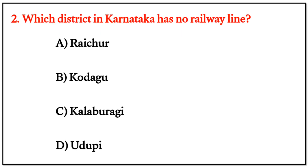MCQ Question 2: Which district in Karnataka has no railway lines? The correct answer is option B — Kodagu.